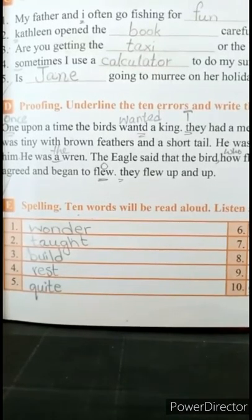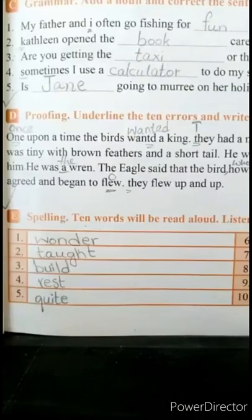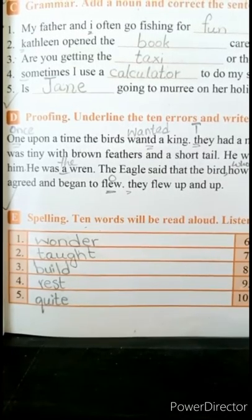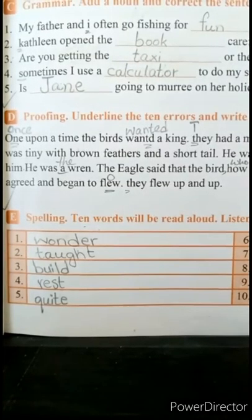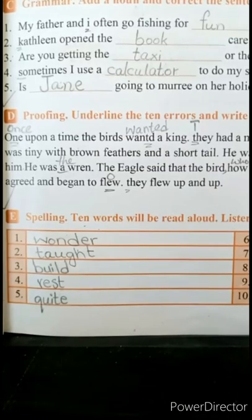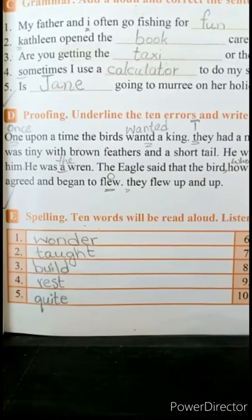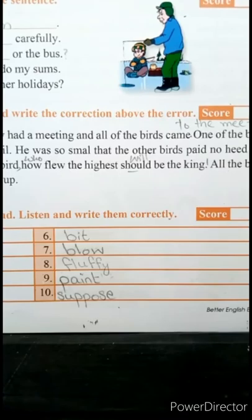We are done with Exercise D. Now come towards Exercise E of page 13 — this is Spelling. 10 words will be read aloud, listen and write them correctly. The very first is: wander. Second one is: start. Third one is: build. Fourth one is: rest. Fifth one is: quiet. Sixth one is: bet. Seventh is: blow. Eighth one is: fluffy. Ninth one is: pant. And tenth one is: suppose.